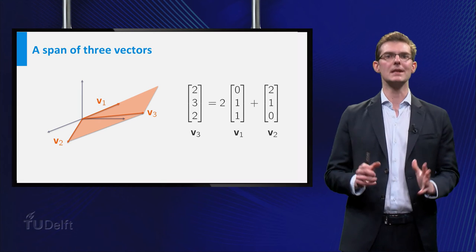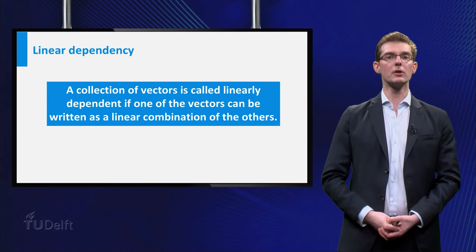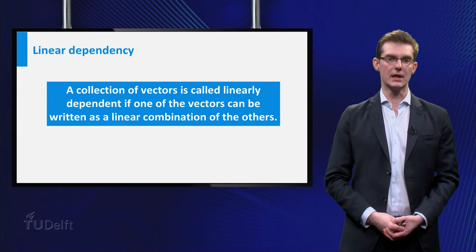Now this is exactly what we mean by linear dependence. A collection of vectors is called linearly dependent if one of the vectors can be written as a linear combination of the others.